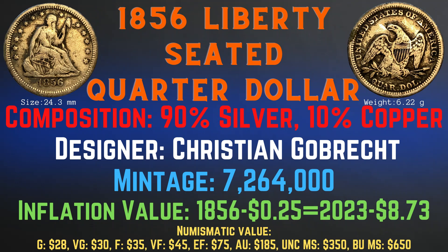Next we will look at the 1856 Liberty Seated quarter dollar. It has a size of 24.3 millimeters, a weight of 6.22 grams, a composition of 90% silver and 10% copper, and the designer was Christian Gobrecht. The mintage is 7,264,000 and this coin has an inflation value of $8.73 for the year 1856. Numismatic values range from $28 in good condition up to $650 in brilliant uncirculated mint state condition.